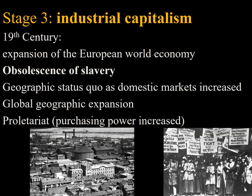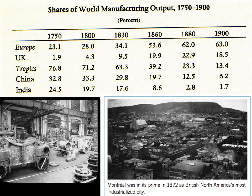Stage 3, industrial capitalism, saw the expansion of the world economy and the absorption of subsystems. Changes in the mode of production eventually led to the obsolescence of slavery, and semi-peripheral areas engaged in mercantilist-type activity to offset core advantages. The proletariat achieved greater purchasing power. Industrialization dramatically increased global output — England's rise from 1800 to 1880 more than doubled its output, while countries like China fell to about a third of their original productivity relative to European states.